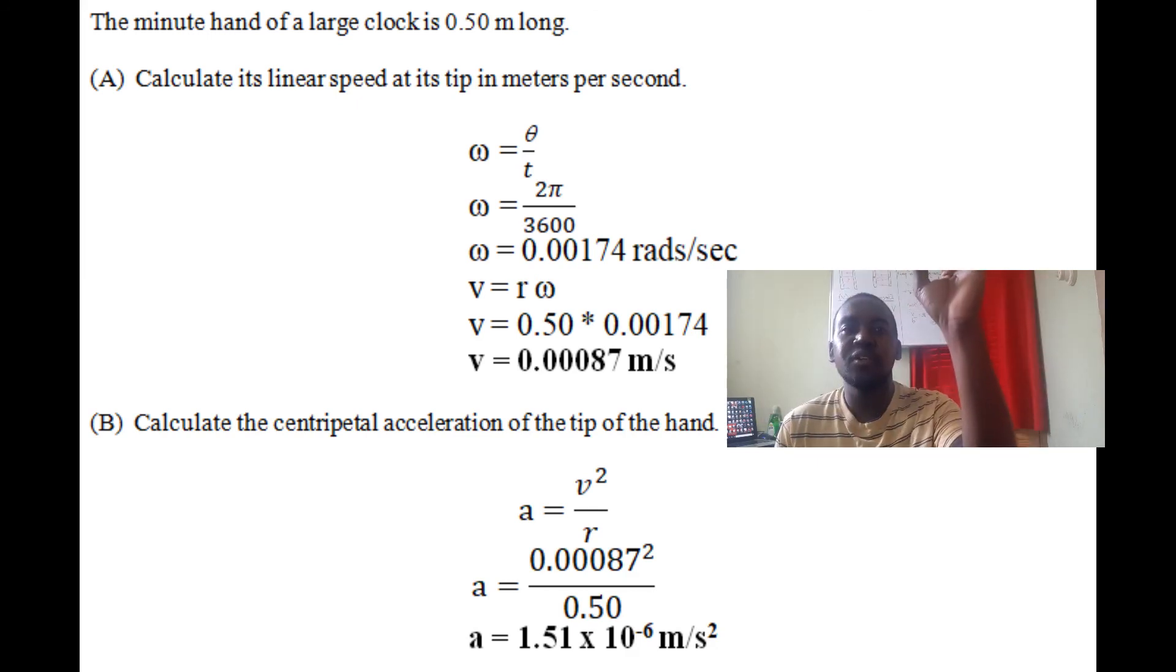For a clock, the minute hand goes around from 12 back to 12, creating an angle of 360°. In radians, 360° is 2π. So θ is 2π, and the time it takes to go around is 60 minutes, which is 60 times 60 equals 3600 seconds.